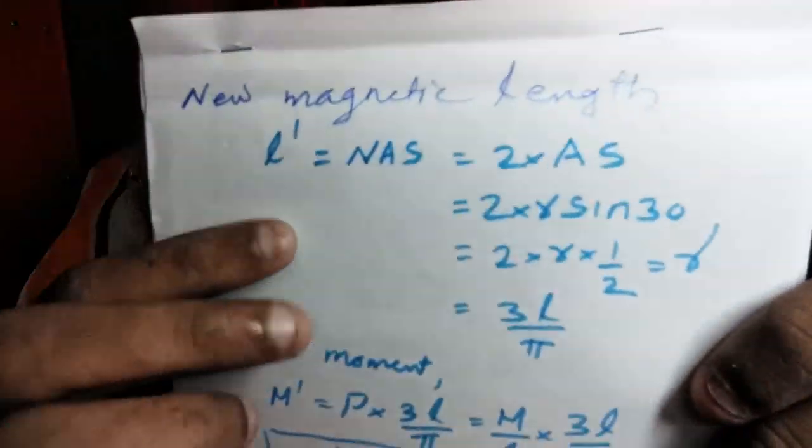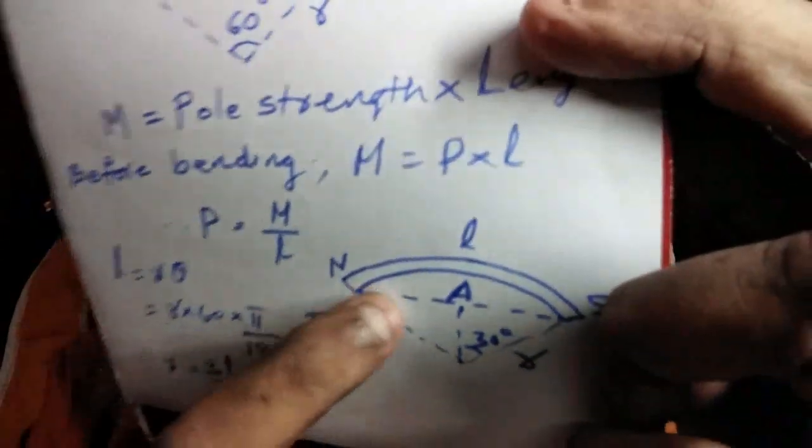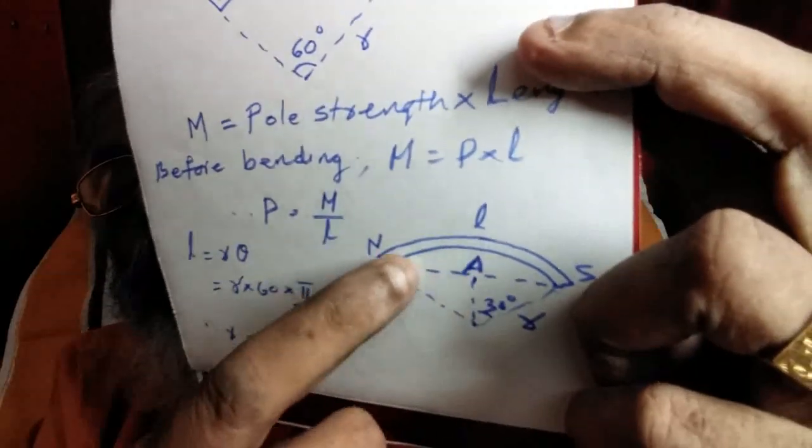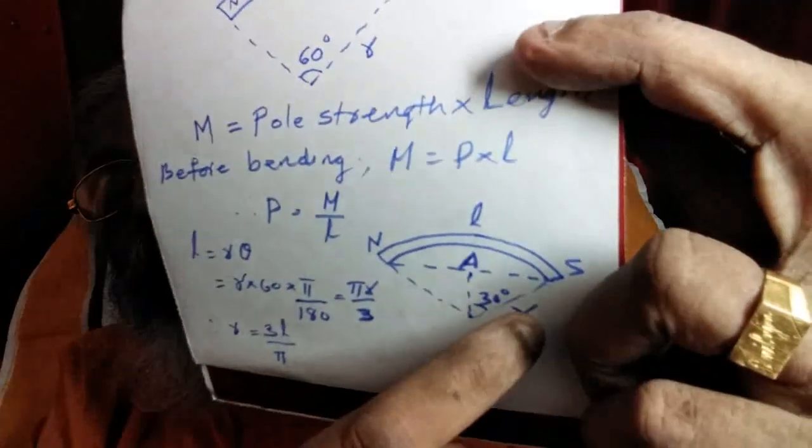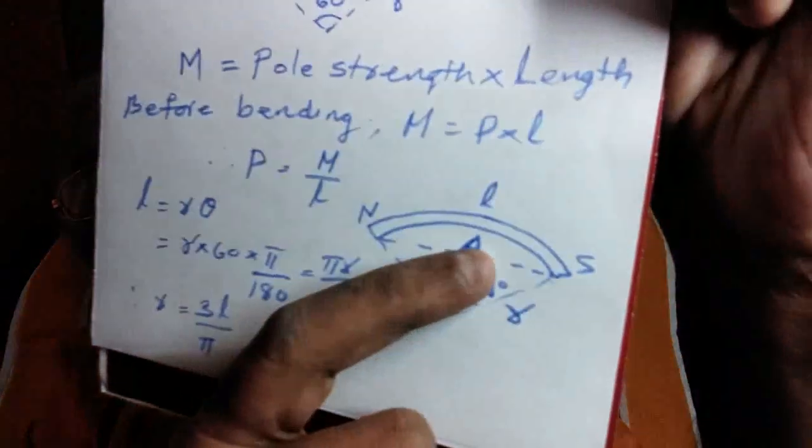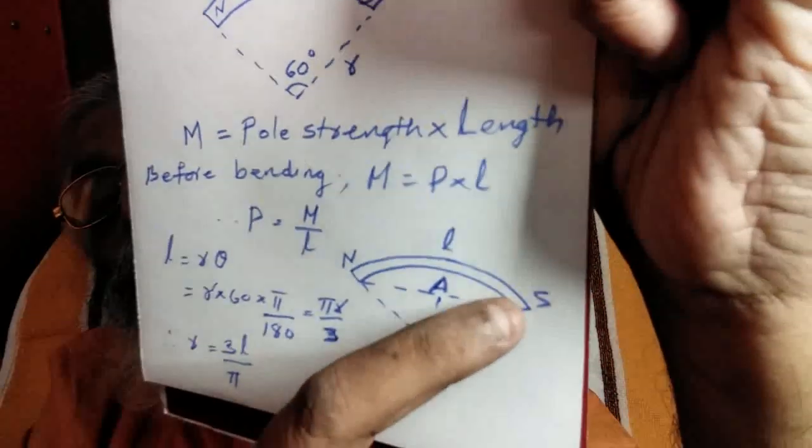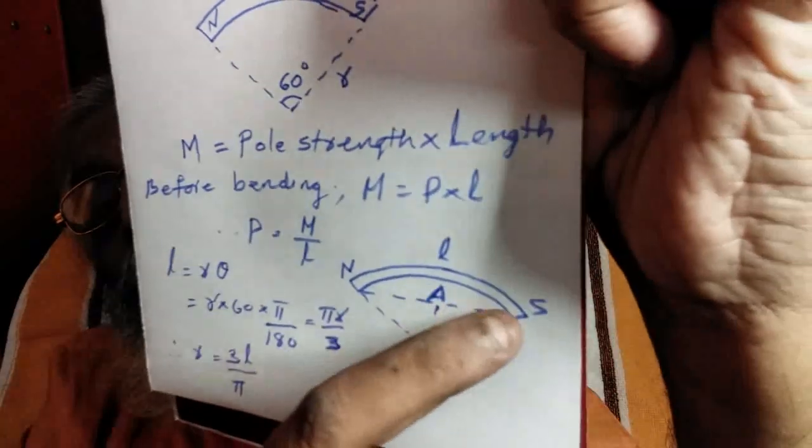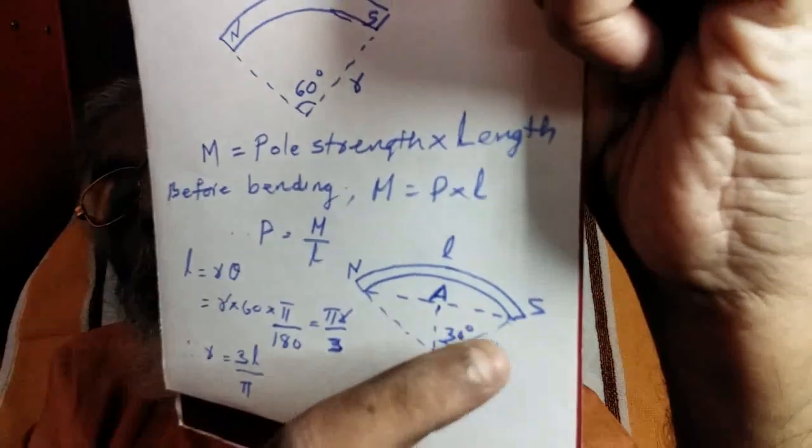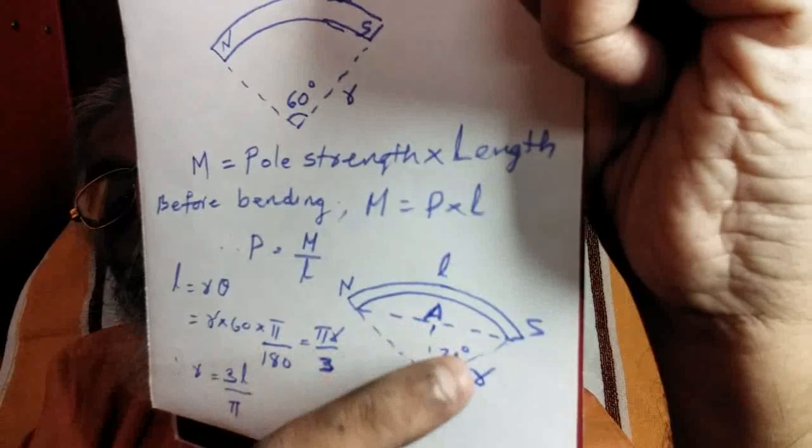Now, the magnetic length. The new magnetic length is twice N into A. That is, 2 into R sin 30. N into A is this distance. In the right angle triangle, opposite side is R sin 30. The full length is 2 into R sin 30. That is now the new magnetic length.